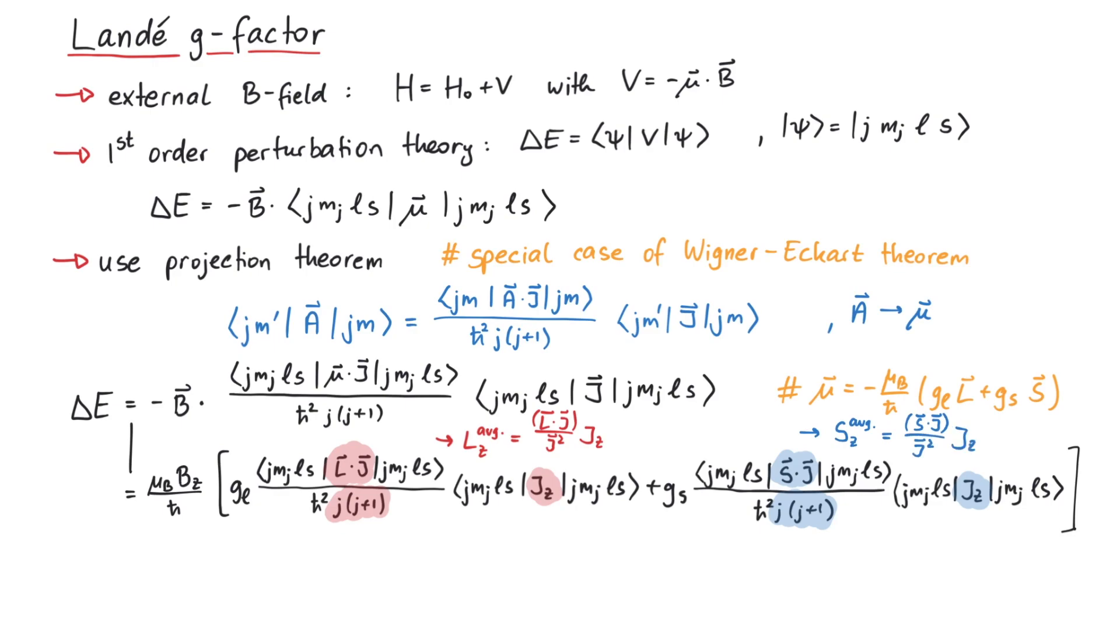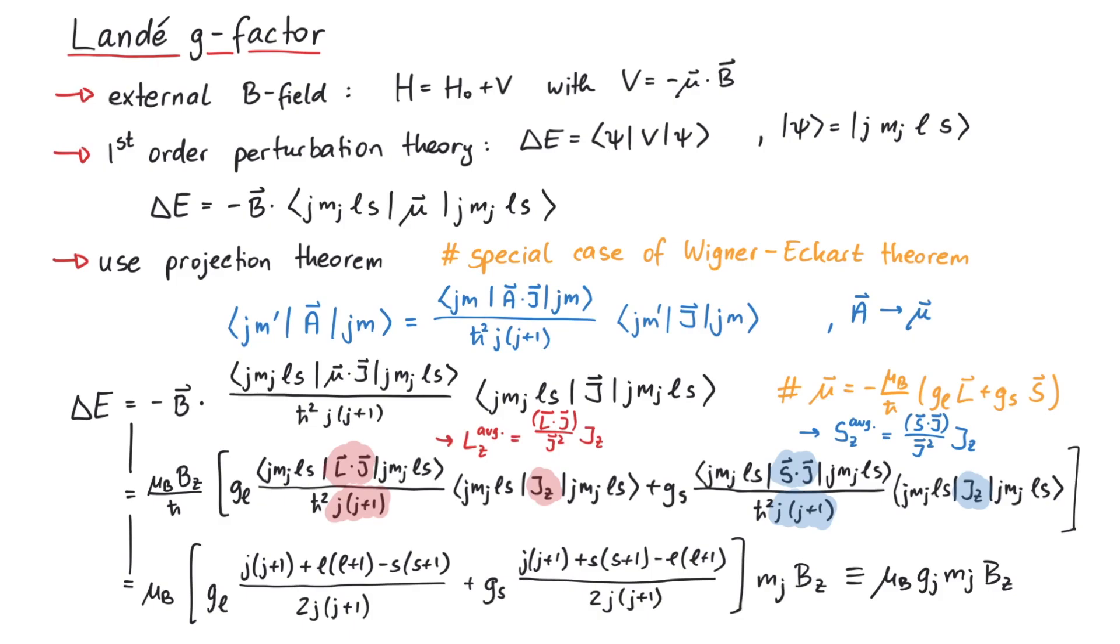By replacing the inner products of L and S with j, like before, we can let all operators act on the ket states and get the same expression for the Landé g-factor, valid in first-order perturbation theory. And that's pretty much it for this video. Thanks for watching.